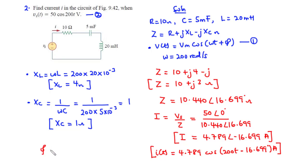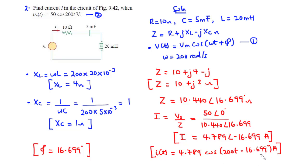The phase angle between the current and the voltage is 16.699 degrees. Since the phase angle of the impedance is positive, the impedance is inductive, hence the current lags the voltage by 16.699 degrees. Comparing I(T) and V(T), the phase angle for the current is −16.699°, confirming the current lags the voltage. That's it for today's video. Thanks for watching and see you in my next video.